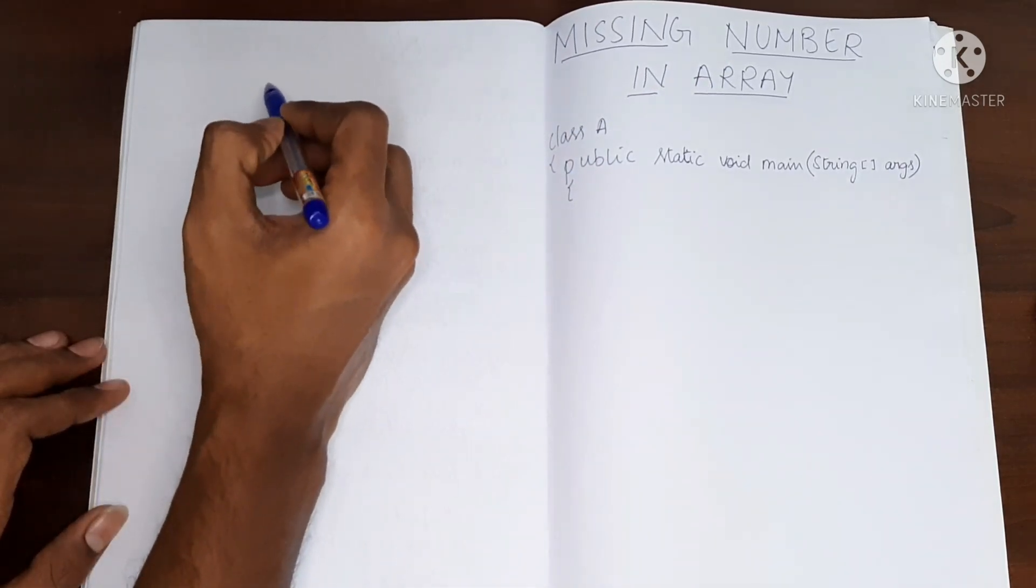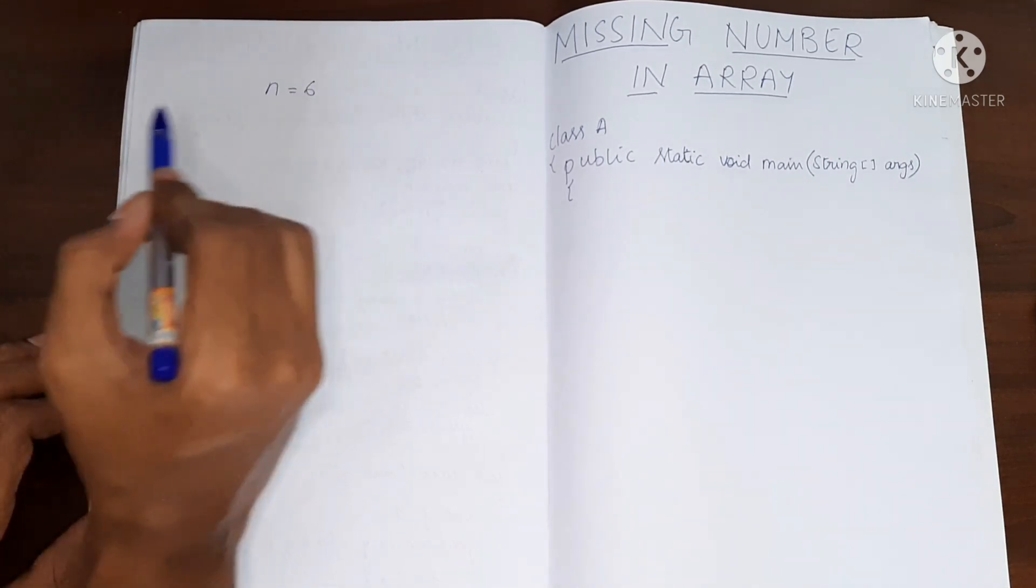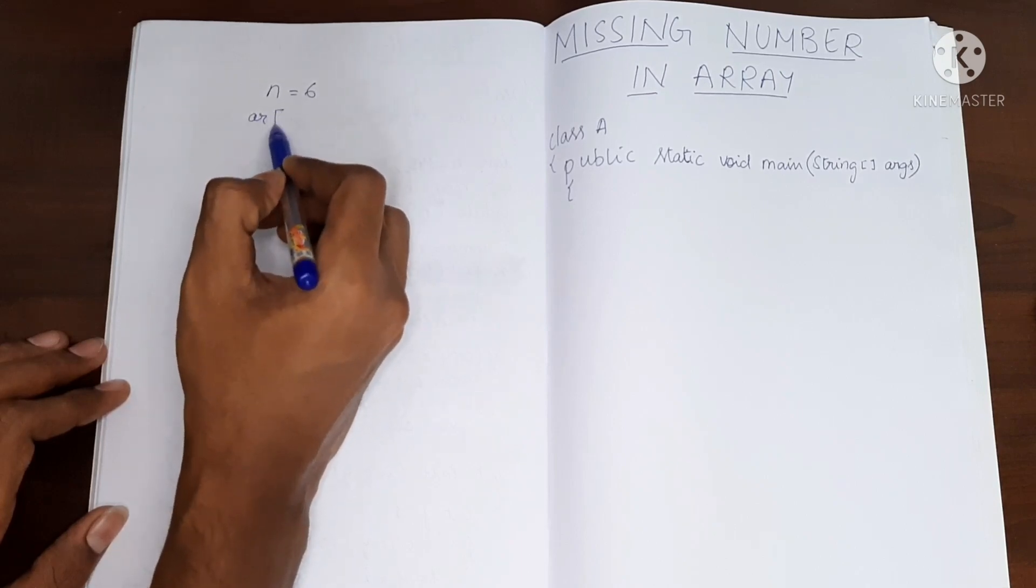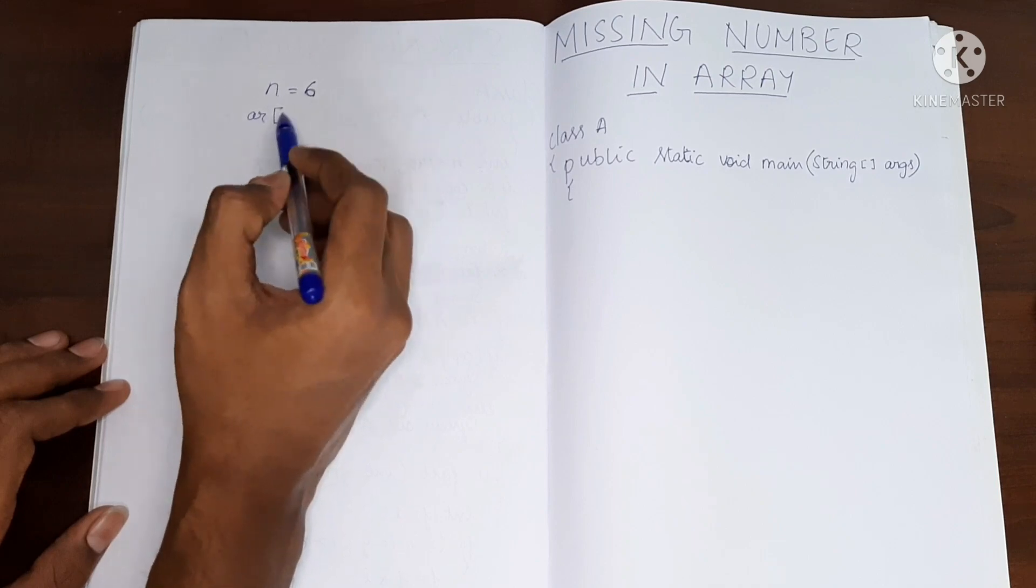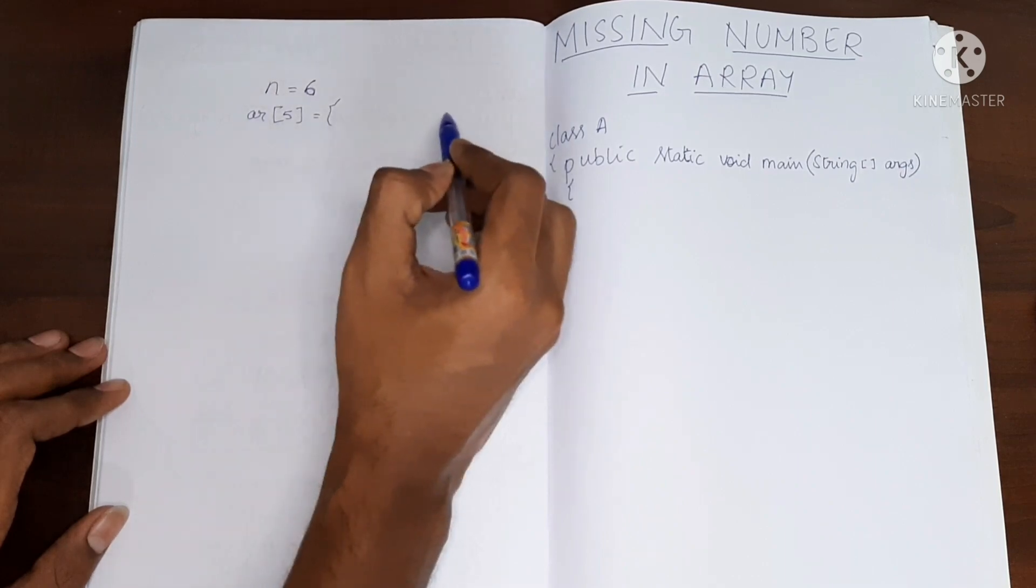So we will be having some value, say n as 6. This is the input and we will also have an input array of size n minus 1. So if n is 6, the size of the array will be 5. And what this array will have?